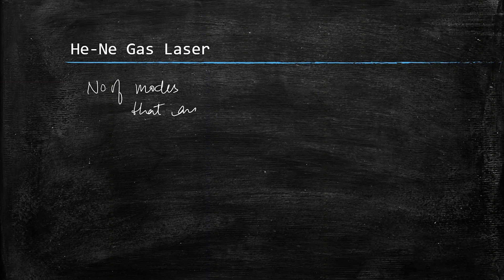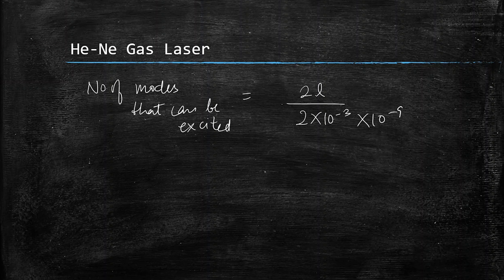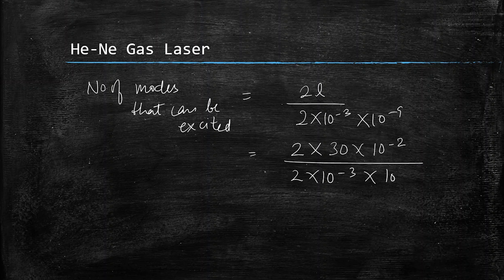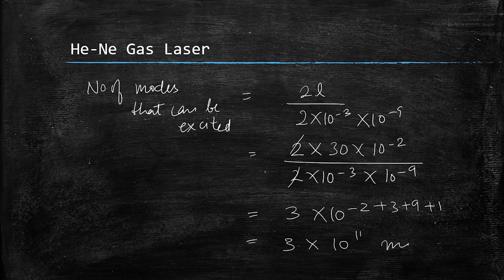The number of modes equals 2L·Δλ/λ² × λ²... simplifying, it becomes 2·L·Δλ / λ² in appropriate units. Substituting L = 30 cm = 30 × 10⁻² m and Δλ = 2 × 10⁻³ nm = 2 × 10⁻¹² m, and λ = 6328 Å = 6328 × 10⁻¹⁰ m, after solving the exponents we get approximately 11. So about 11 longitudinal modes can be excited.